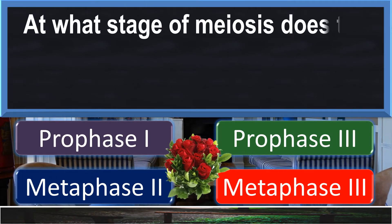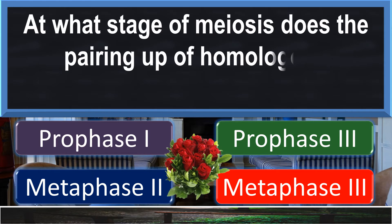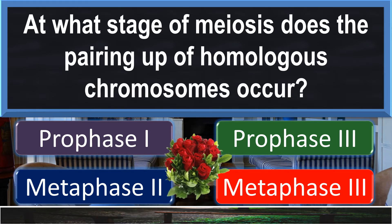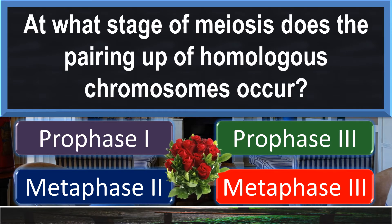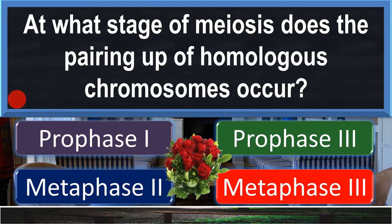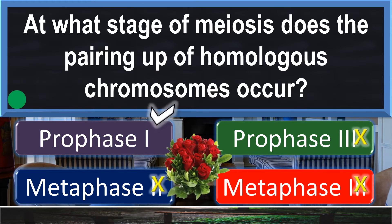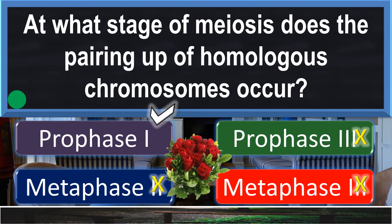At what stage of meiosis does the pairing up of homologous chromosomes occur? Prophase one.